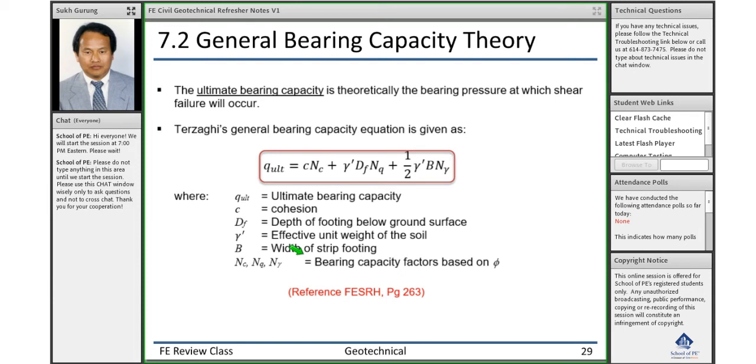Your NC, NQ, and N gamma are known as bearing capacity factors, and these bearing capacity factors depend upon only one soil parameter: your internal friction angle phi. We talked about C and phi using Mohr-Coulomb theory earlier.